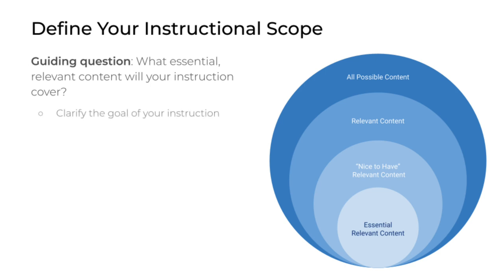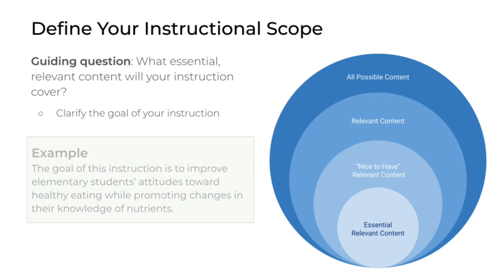The first step of defining your instructional scope should be to clarify the goal of your instruction. Go back to your analysis work and review your instructional goal. Here's an example: the goal of this instruction is to improve elementary students' attitudes towards healthy eating while promoting changes in their knowledge of nutrients.